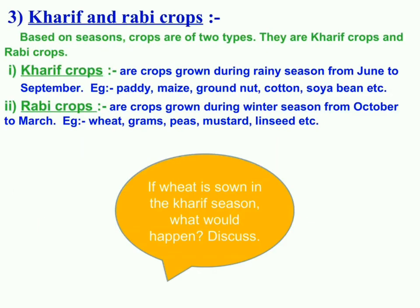As per our syllabus, we will focus on two seasons: Kharif and Rabi. Kharif crops are those which are sown in the rainy season. These crops are sown during June–July and harvested in September. Examples are soybean, rice, and groundnut. Rabi crops are grown in winter season, sown during October and harvested by March. Examples include pea, mustard, wheat, and gram.